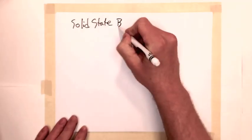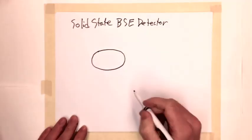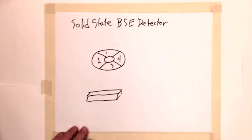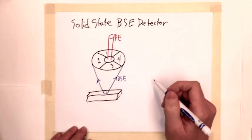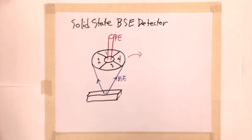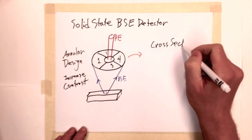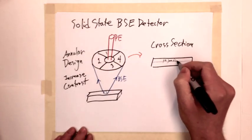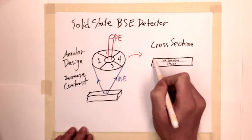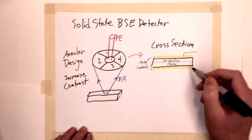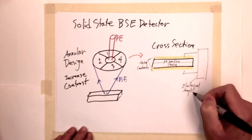Dedicated solid state detectors are one of the primary ways of detecting backscattered electrons. A biased p-n junction is made in an annular configuration just under the final lens aperture. Electrons landing on the detector will generate current that can be measured with an amplifier circuit. If the annular detector is divided into quadrants, the signal from the individual quadrants can be added to produce increasing atomic number contrast or subtracted to produce stronger topological contrast.